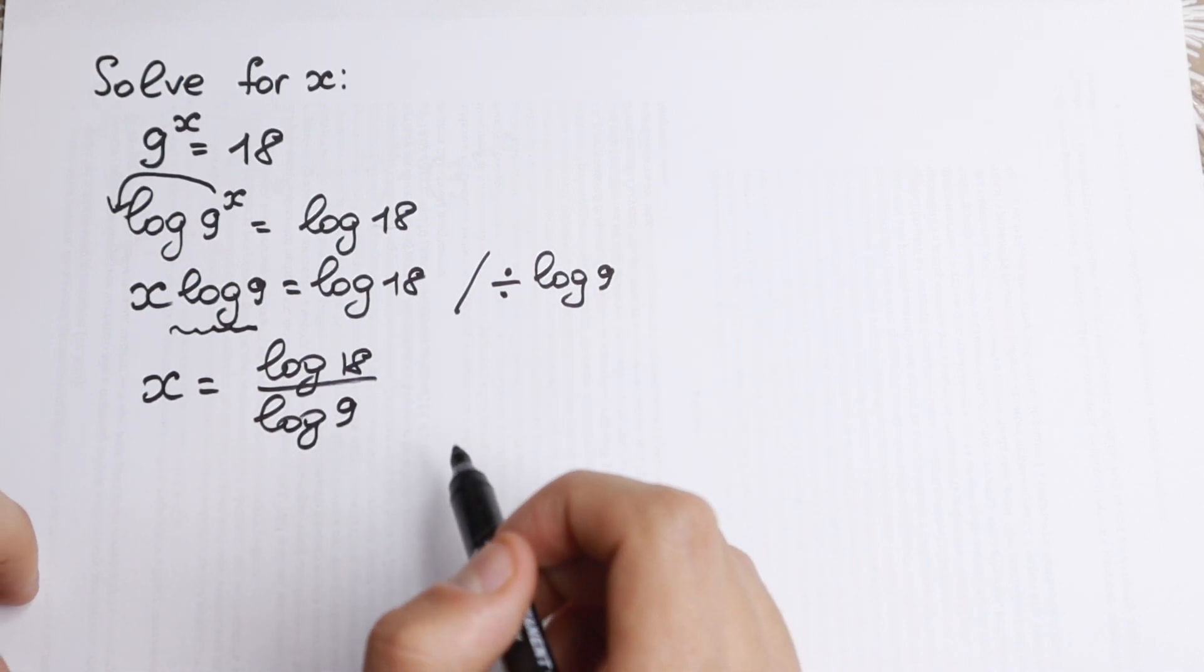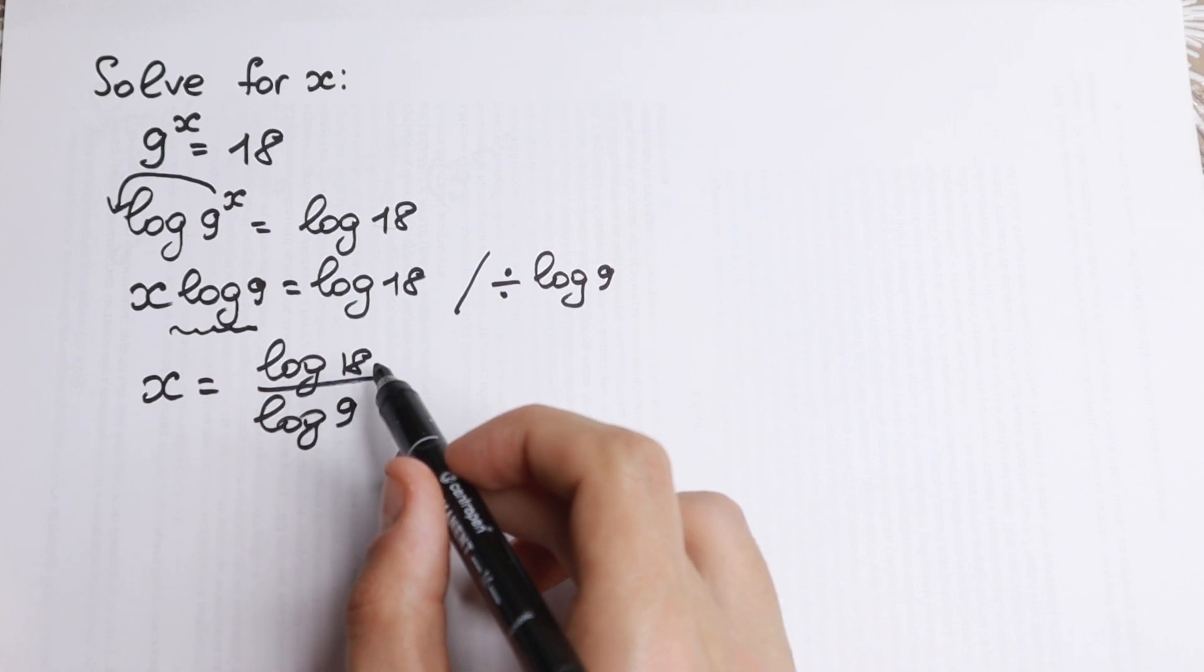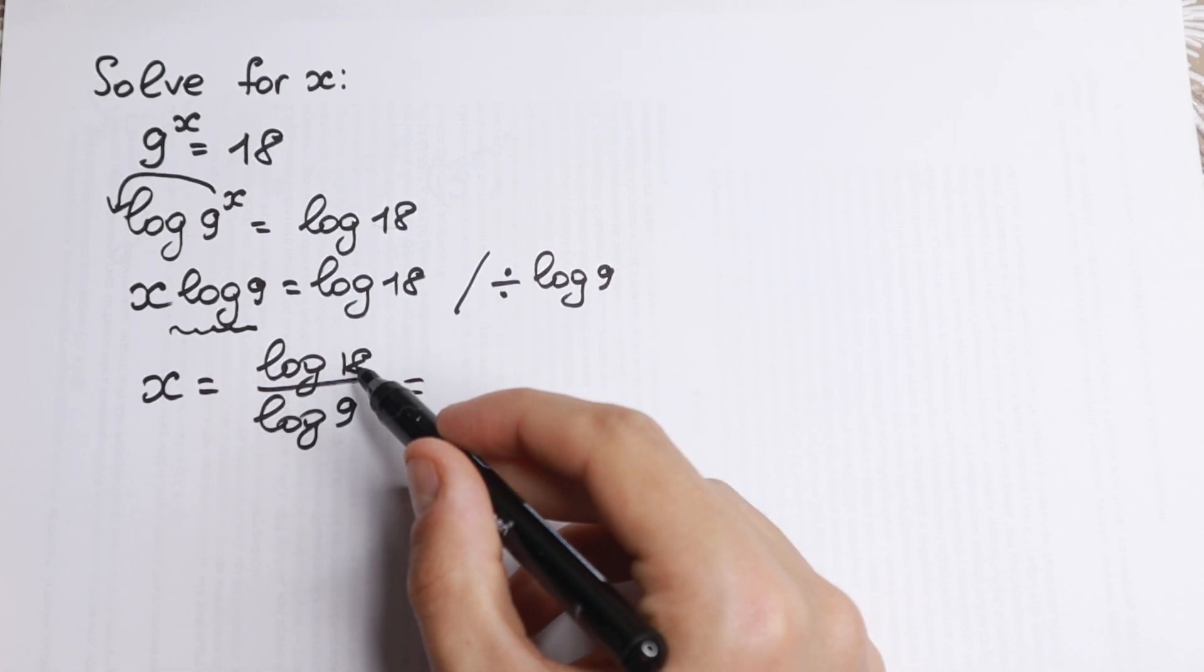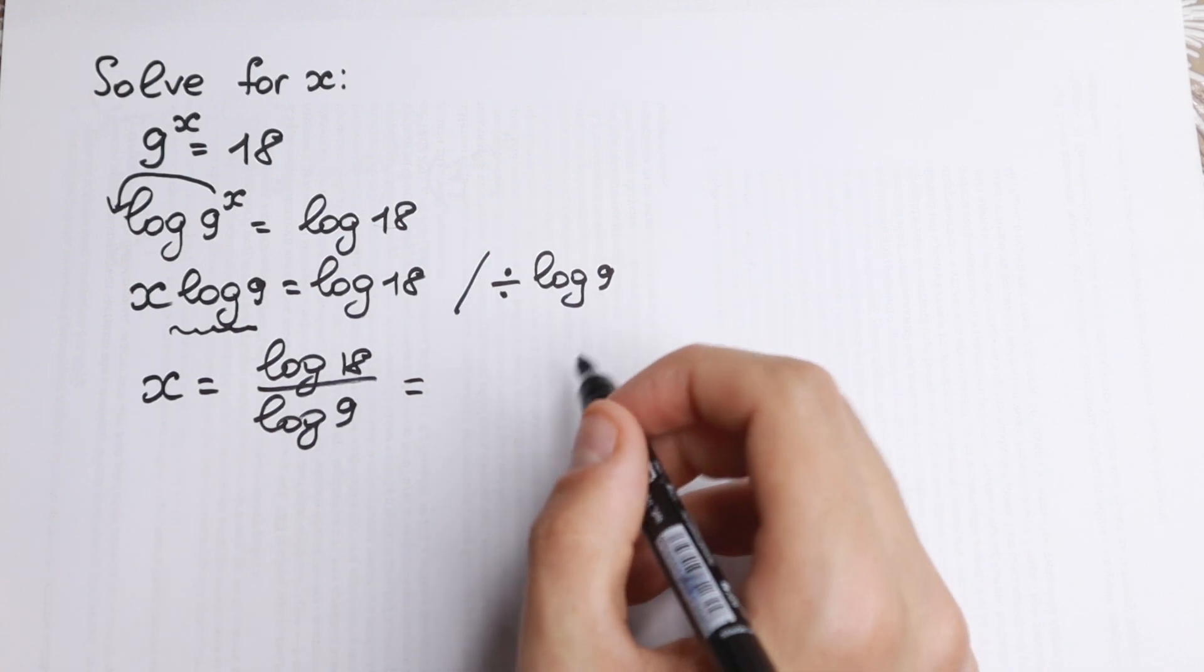But in another way we can easily simplify this a little bit, because 18 and 9 are really good numbers. And moreover, firstly, we can write this 18 as 2 times 9. Let's do this.